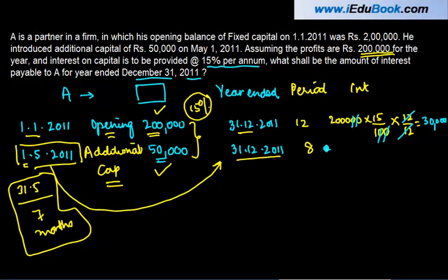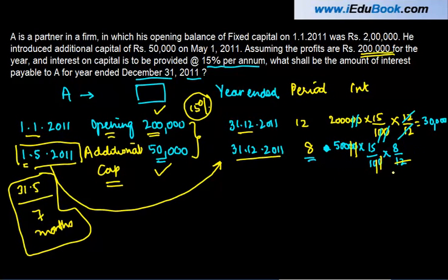For the additional capital, the amount introduced is ₹50,000. Applying the formula: ₹50,000 × 15% × 8/12. Working this out: 50,000 × 15 × 8 / 1200 = ₹5,000. So the total interest on capital is ₹30,000 + ₹5,000 = ₹35,000.